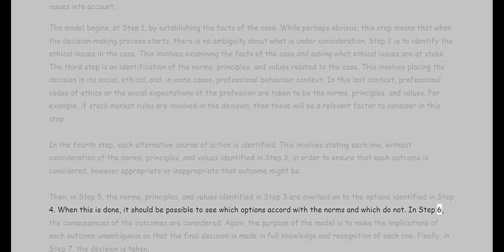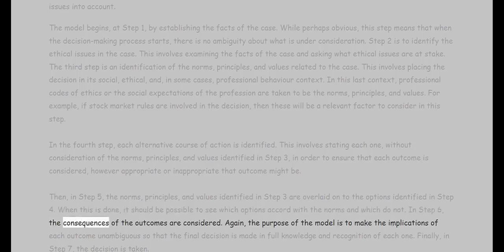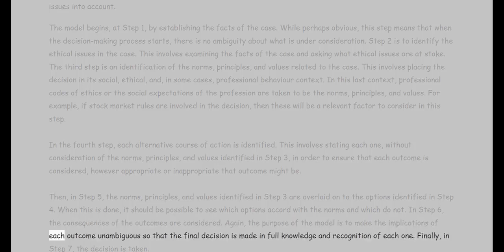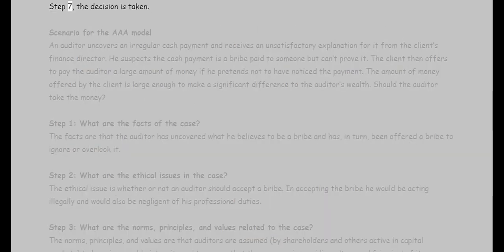In step six, the consequences of the outcomes are considered. The purpose of the model is to make the implications of each outcome unambiguous so that the final decision is made in full knowledge and recognition of each one. Finally, in step seven, the decision is taken.